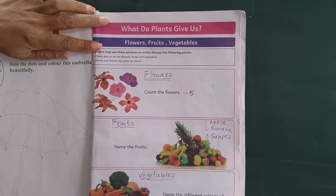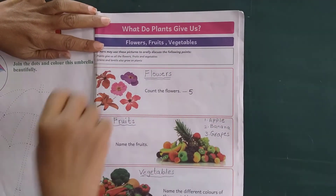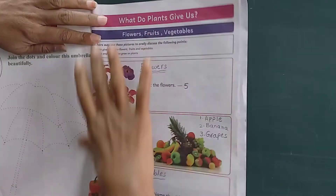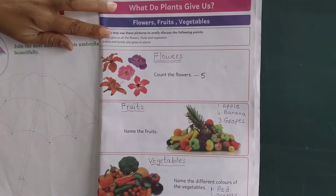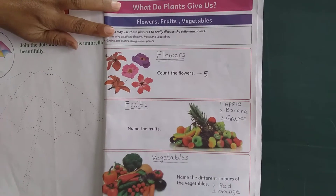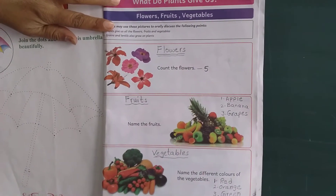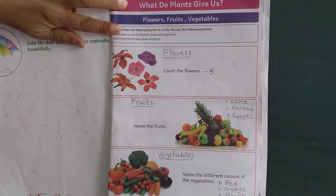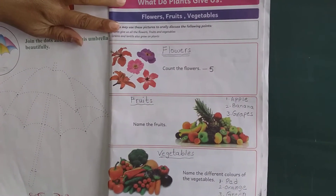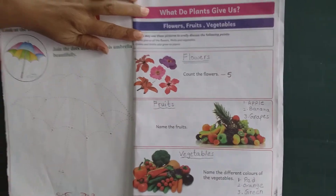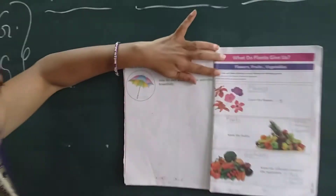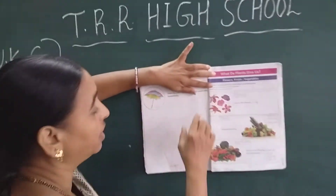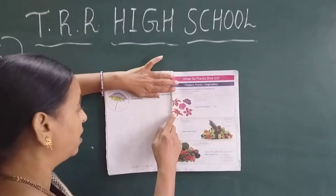Do you know? We know about fruits and vegetables. From where do we get fruits and vegetables, children? From the plants.